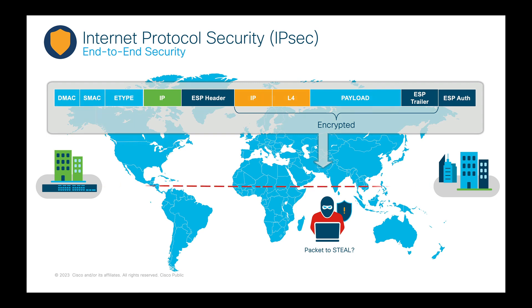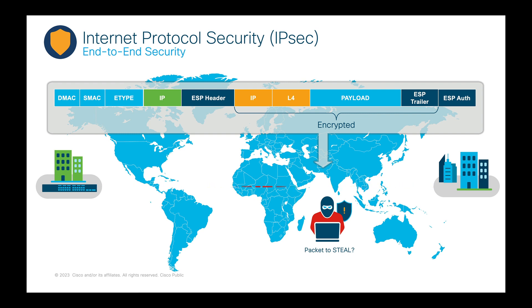IPsec is a protocol that encrypts sensitive information to prevent unwanted monitoring across the public internet and authenticates data quickly if the data originates from an unknown sender. Organizations use IPsec to protect against replay attacks or man-in-the-middle attacks, thanks to its mature protocol suite that supports a range of encryption and hashing algorithms and is highly scalable. Having this capability in your switch to provide secure connectivity to any remote site gives you a perfect infrastructure for a lean branch deployment.